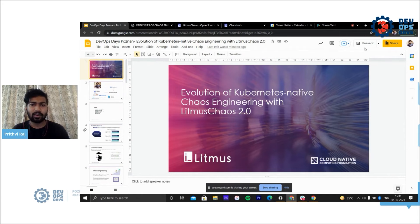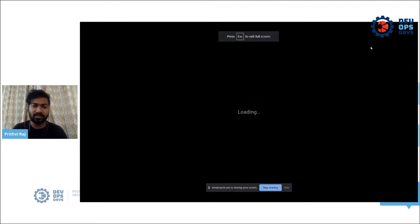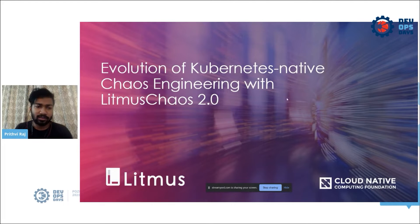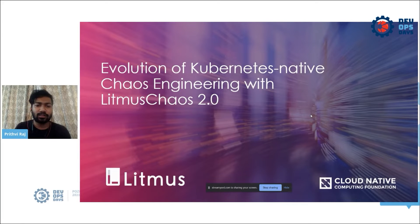Thanks a lot everyone, and thanks to the organizers for putting together this DevOps event. Today we'll be talking about an aspect of DevOps called chaos engineering with LitmusChaos 2.0, which brings in the evolution of Kubernetes native as well as non-Kubernetes native chaos engineering.